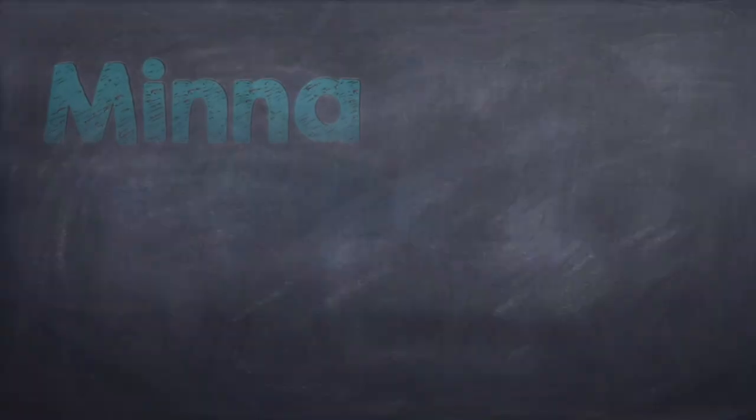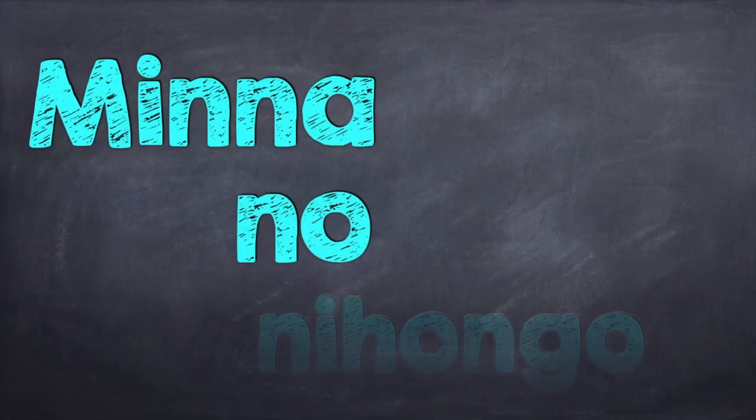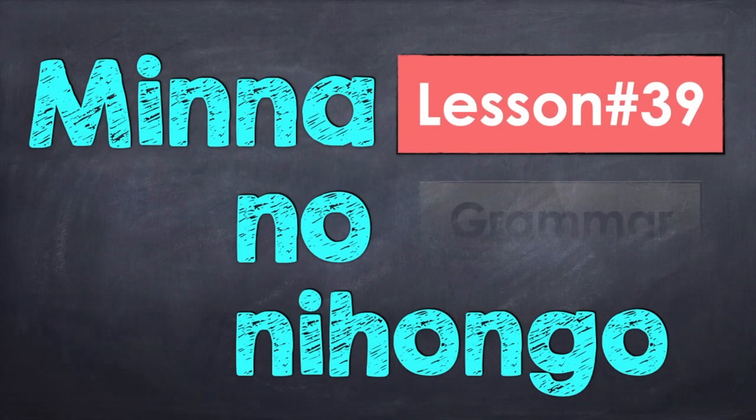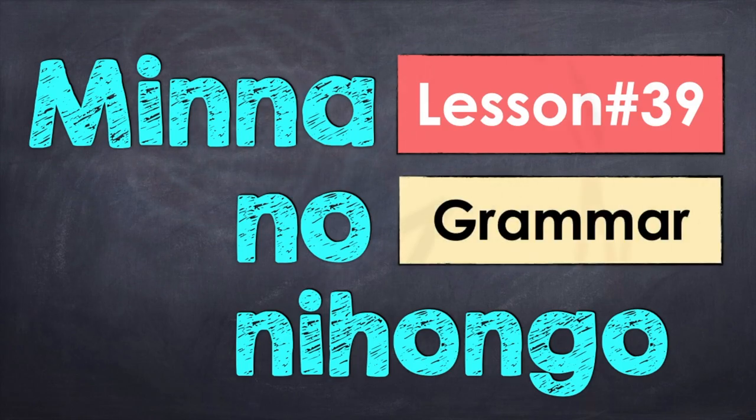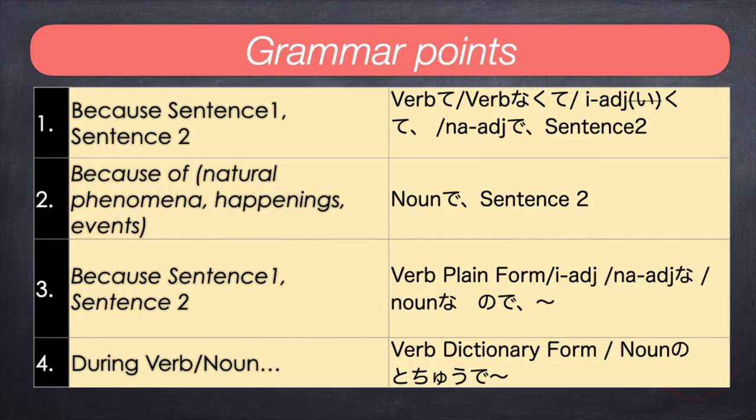それでは、レッスン39番の文法を勉強しましょう。In this lesson, we will learn about different ways to give reasons or causes, followed by the result, effect, or conclusion. Make sure to check out the vocabulary list for this lesson. Here are the grammar points for today's lesson.